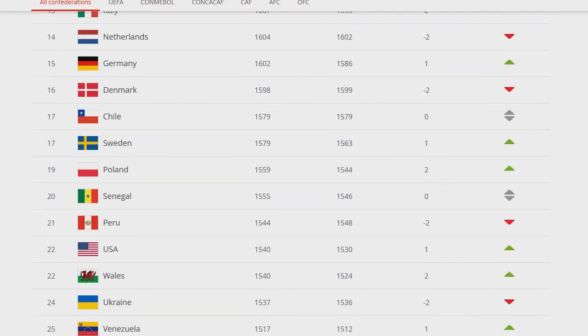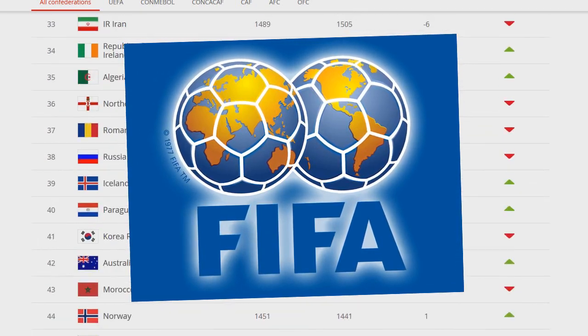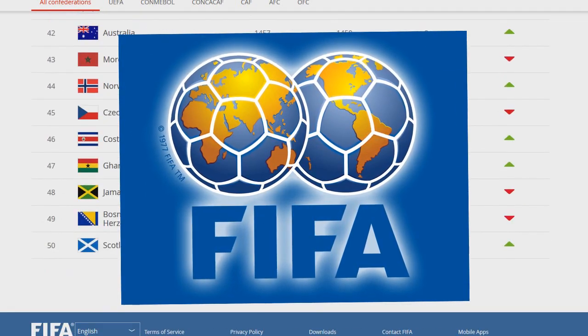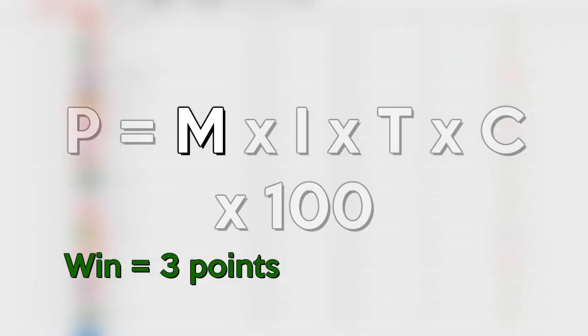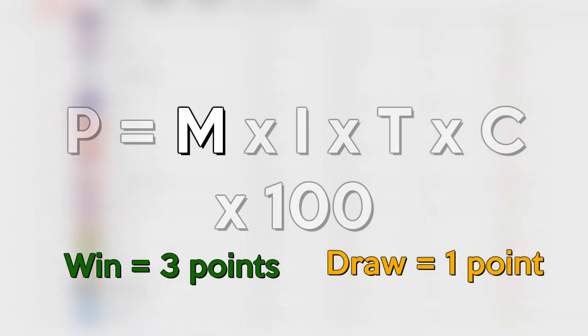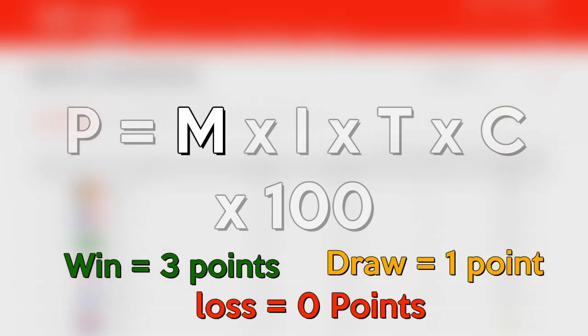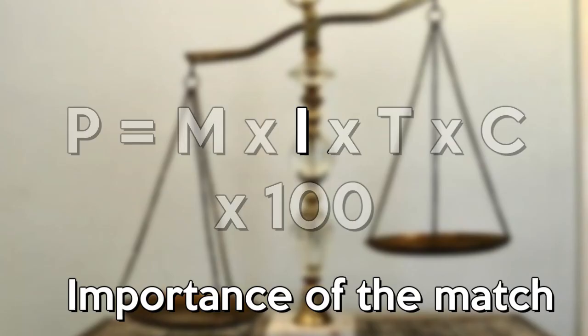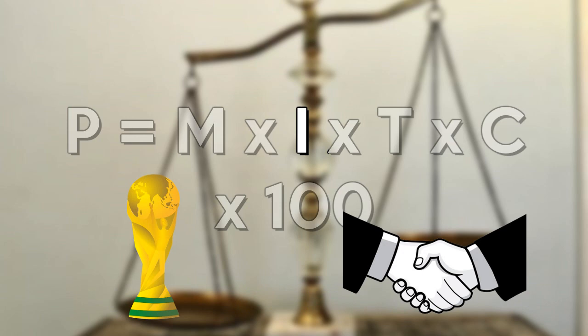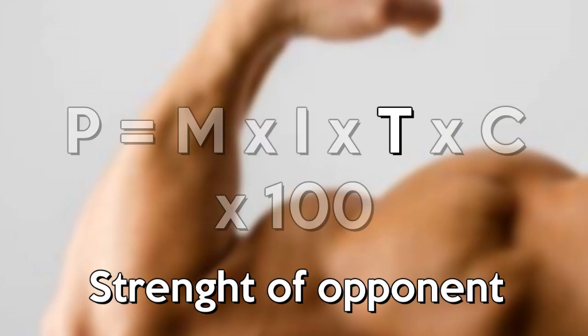In order to understand how this works, you need to know how FIFA ranks work. FIFA uses a certain formula: P equals M by I by T by C by 100. M is the points a team wins after the end of a specific game — a win gives 3 points, a draw gives 1 point, and a loss gives 0 points. I is the importance of a match; basically a game in the World Cup will earn you more points than a friendly game. T is the strength of the opponent.